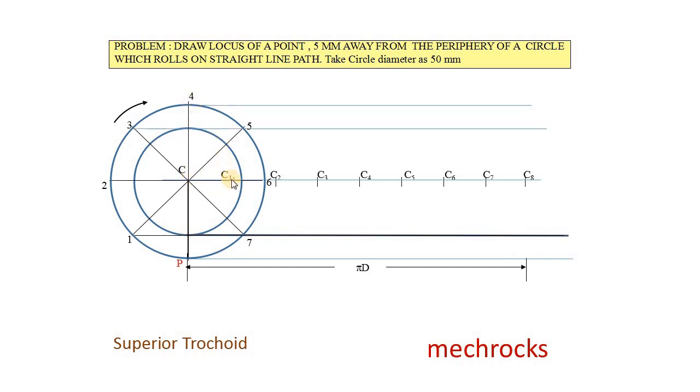Now, C1 as center, CP as radius. Cut the 1, 7th line like this. What is the radius? CP. The CP equals 30. 30 as radius, C1 as center. C2 also. And C3 also.